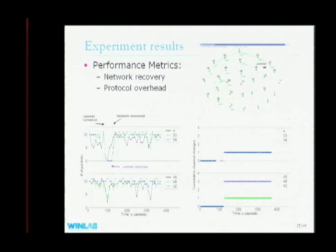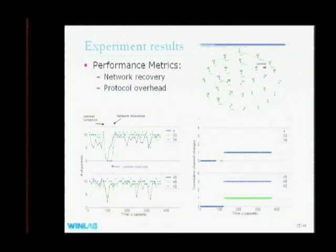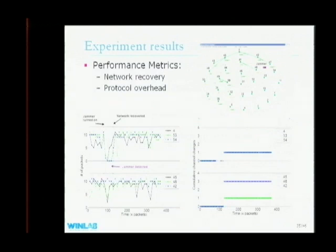The majority of the delay in network repair is devoted to detecting the jammer, not the actual channel switch. We chose a detection window of 40 packets to avoid false alarms, since sensor networks have many transient events. Looking at the cumulative channel-change plot, there are no false positives — most nodes change frequency only once. Only boundary nodes change three times: first to the new channel to find neighbors, second back to the old channel to broadcast a command, and third to move permanently to the new channel.